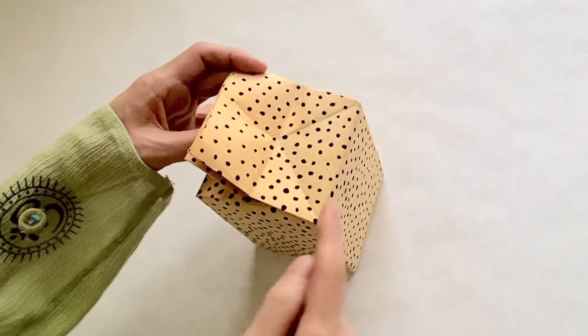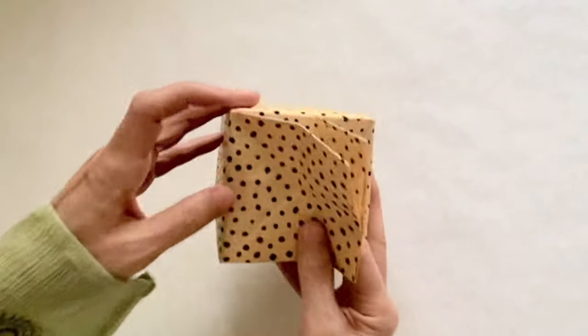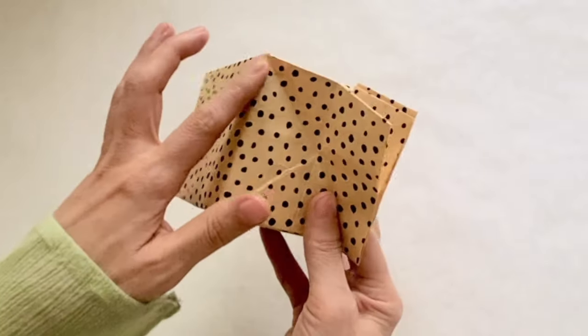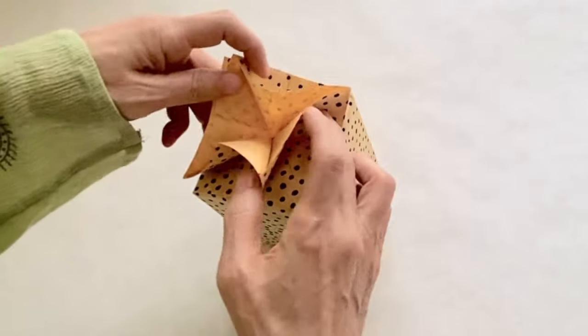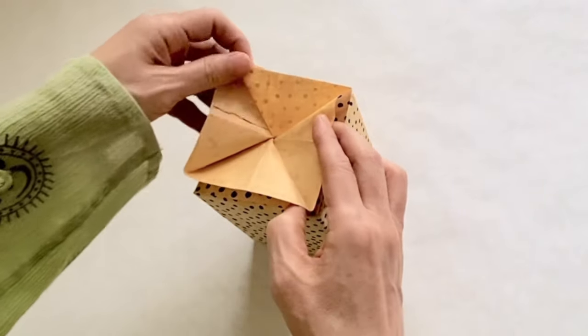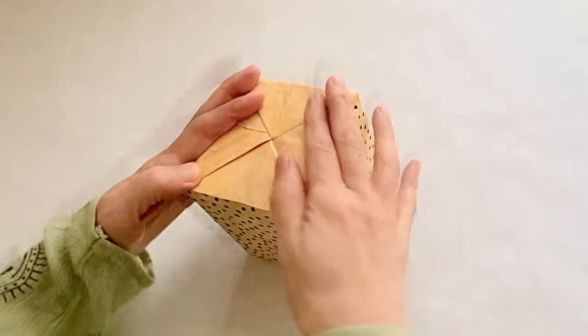Fold this line to this corner and this line to this corner. Open slowly, following the flow naturally. Open completely and make creases.